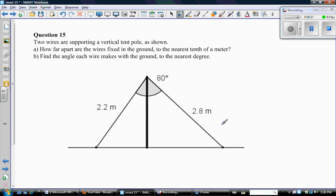Okay, it says two wires are supporting a vertical tent pole as shown. So here's the tent pole, and then I've got this wire here 2.2 meters in length and another wire 2.8 meters in length, and the angle between those two wires is 80 degrees. So Part A says how far apart are the wires fixed in the ground to the nearest tenth of a meter. So I want to know what this distance is here.